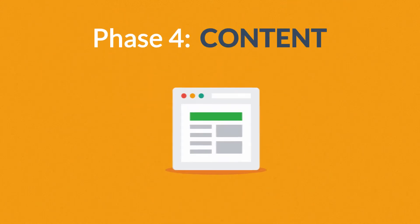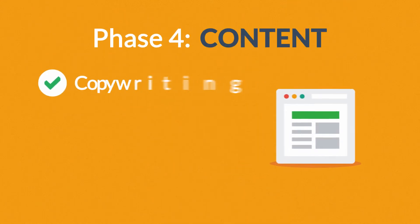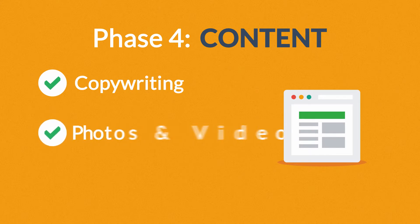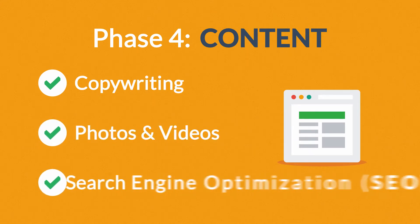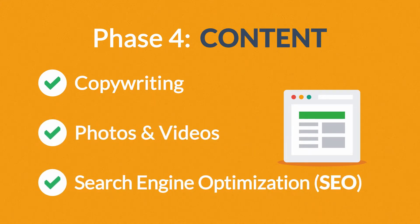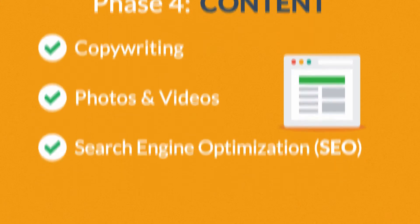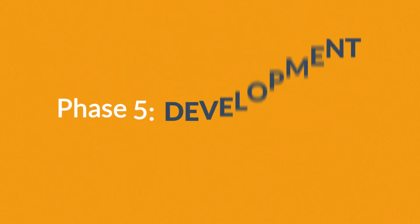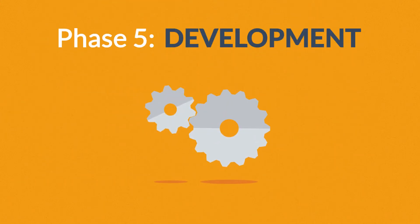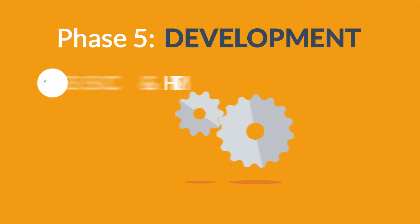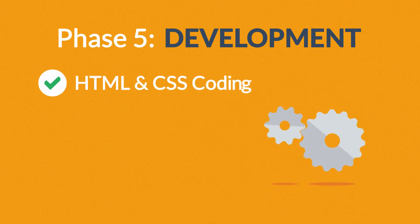Phase 4 — Content: a very important part of the process is choosing the right text, photos, or videos, all optimized not only for your visitors but also for search engines.